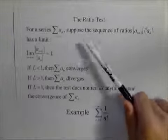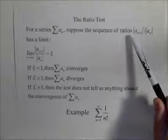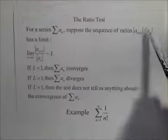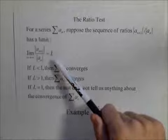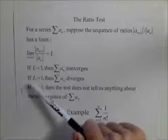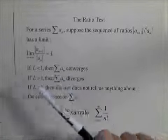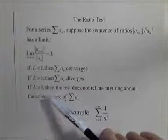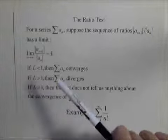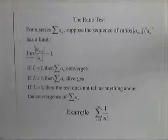If we have a series, suppose that the sequence of ratios of a sub n plus one to a sub n has a limit where it equals L. Then, if L is less than one, it converges. If L is greater than one, it diverges. And unfortunately, if L equals one, the test is inconclusive.